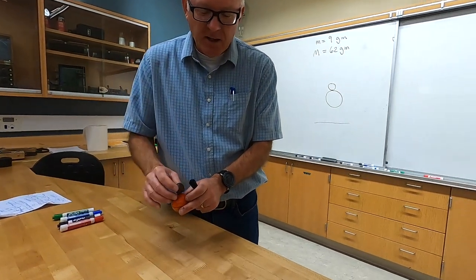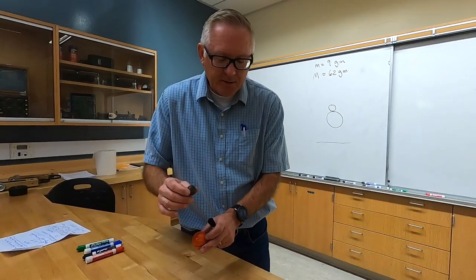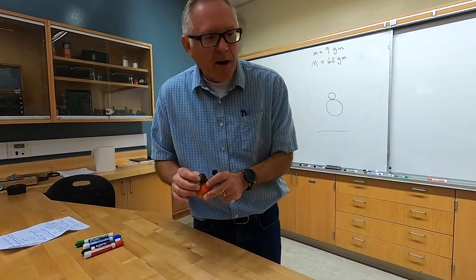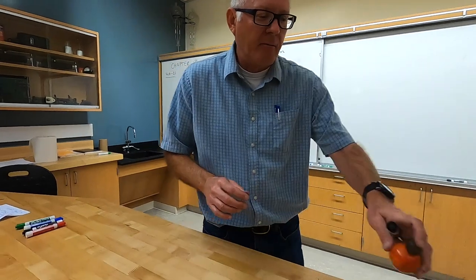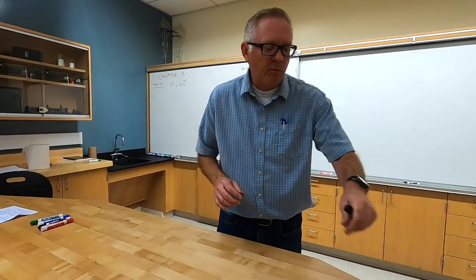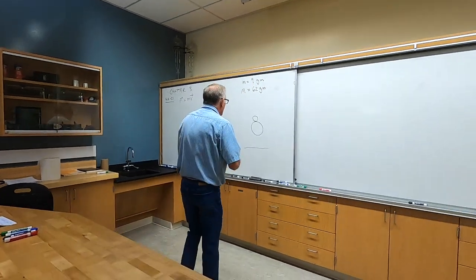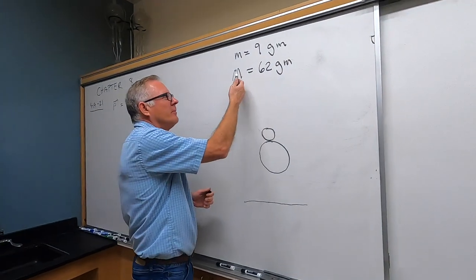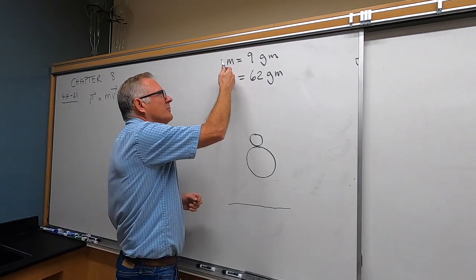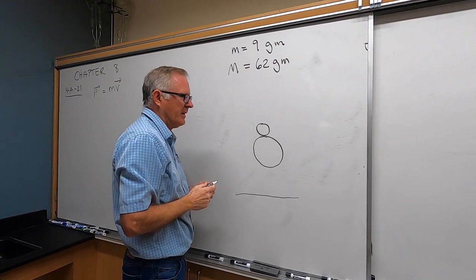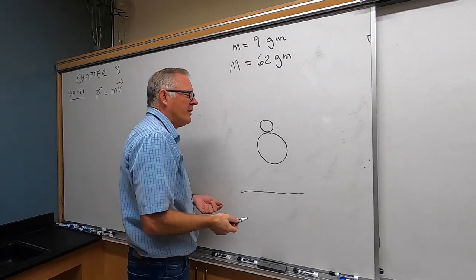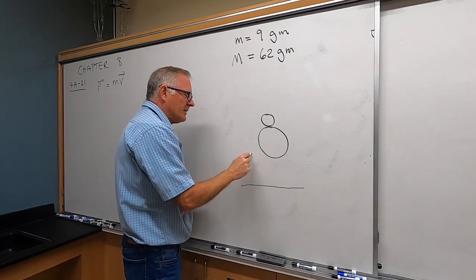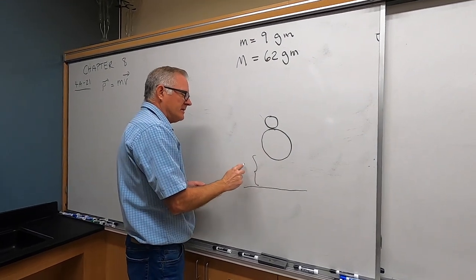Is it going to go twice as high? Three times as high? How high is it going to go? We'll try to solve it first, and then we'll drop it. I weighed the two — the bottom one was 62 grams, the top one was 9 grams. If one was a lot heavier than the other it'd be easier to calculate, but let's just calculate this.